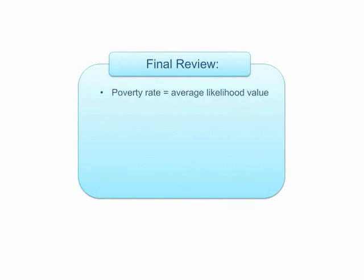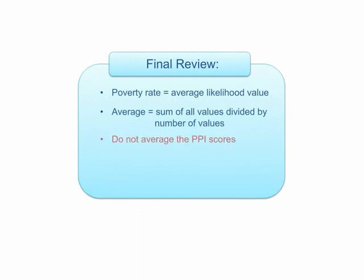Here are the key lessons you should take away from this presentation. To find the poverty rate among a group of households surveyed with the PPI, average all the households' poverty likelihood values, and that percentage represents the percentage of the group that is living below the poverty line. To find an average, divide the sum of all values by the number of values. Do not average the PPI scores — average the likelihood values. And use a weighted average when working with multiple poverty rates.